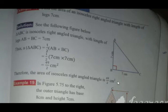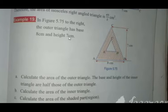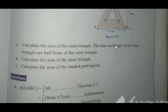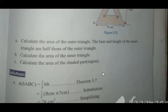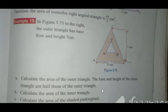The outer triangle is 8 cm. Outer triangle is triangle ABC. So we calculate the area of the outer triangle, half base times height.